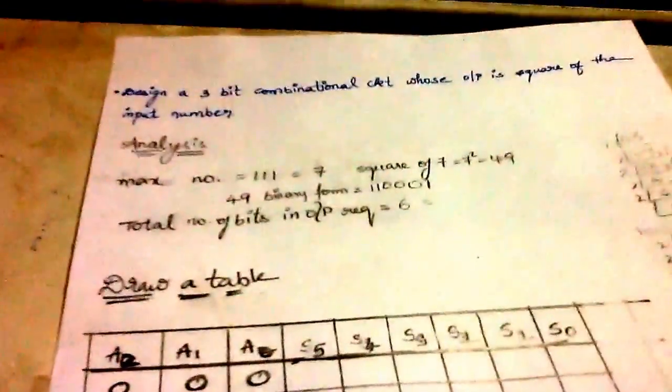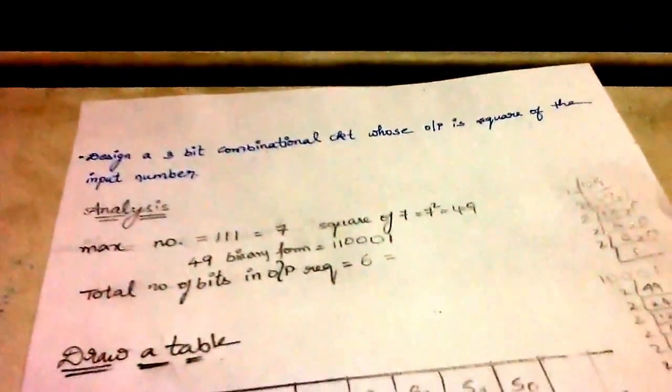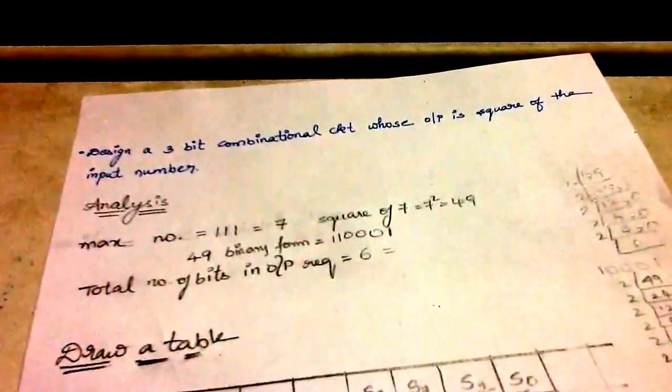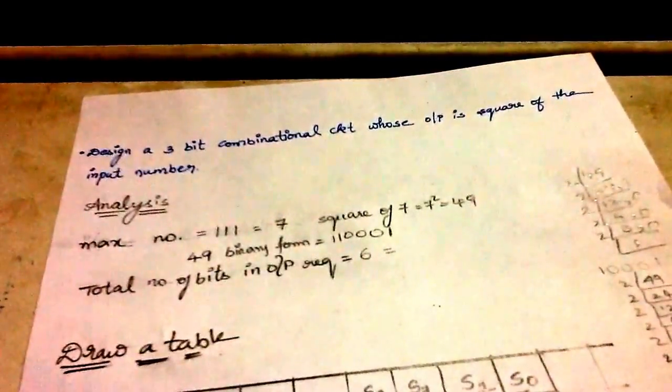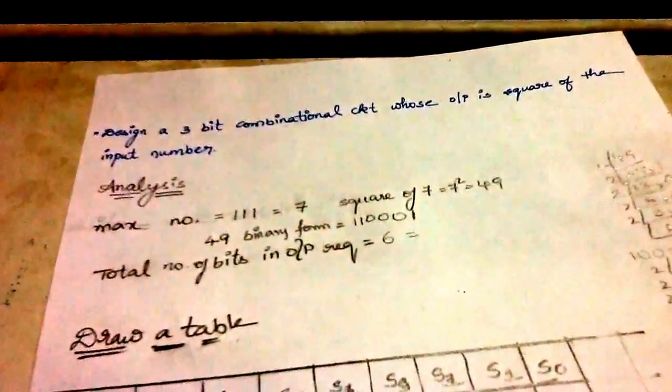Hello YouTube, this is Satish. One of the students asked me to design a 3-bit combinational circuit whose output is the square of the input number.